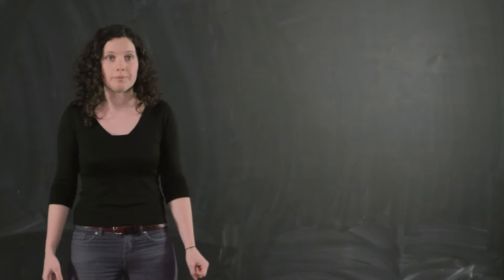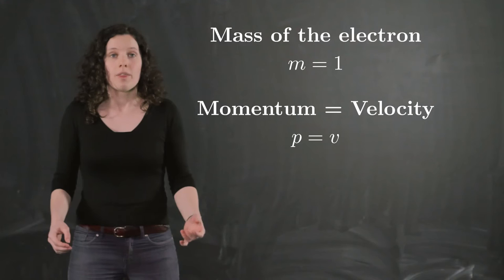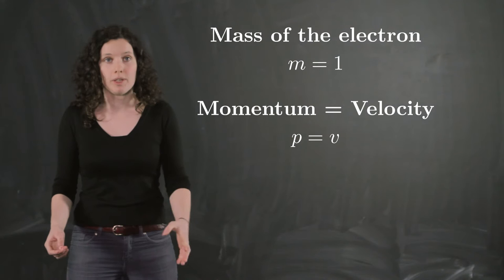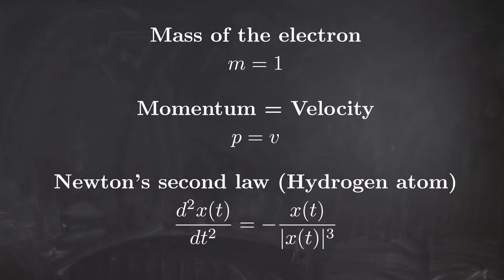Can we express these equations only with the position x? Yes, in fact it is possible. But first, because we really don't like constants, we choose a unit system in which the mass of the electron is equal to 1. Then the momentum p of the electron equals the velocity v. And since the velocity is the first-order derivative of the position, Newton's second law of motion can be rewritten as a second-order differential equation involving only the position x of the electron: the second time derivative of x equals -x/|x|³.